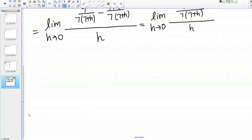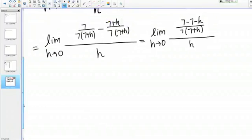Now we see that we can do a little bit of simplification, because I have 7 minus 7 in the top of my numerator. This becomes negative H over 7 times 7 plus H, and that's all over H.